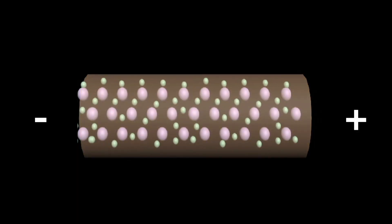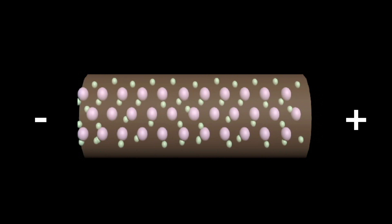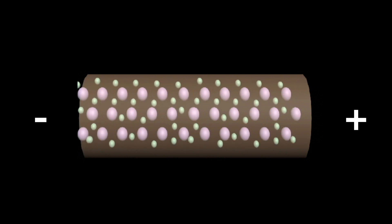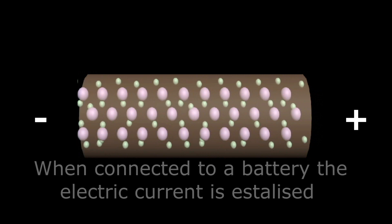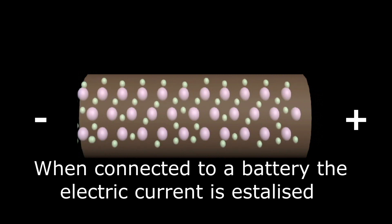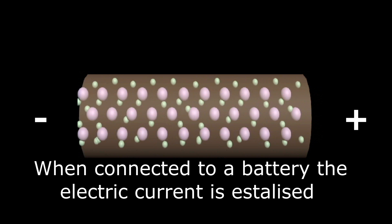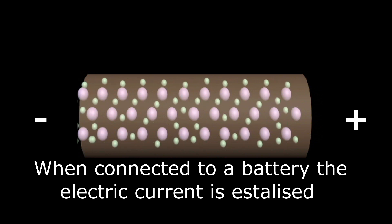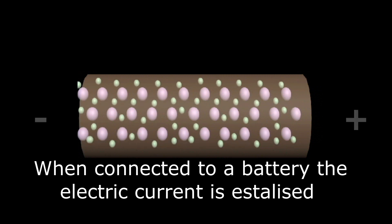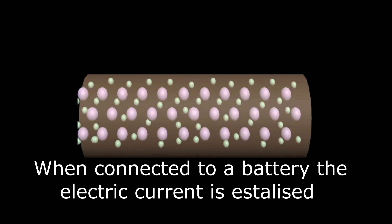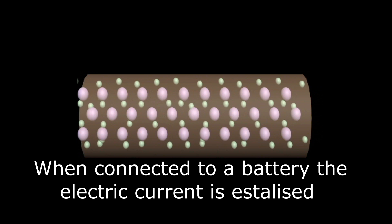When the potential difference is applied across the ends of a conductor, an electric field E is set up at every point within the wire. The electrons experience a force in a direction opposite to the electric field E. As a result of this force, in continuous collision with the atoms, the electrons acquire a net drift velocity.